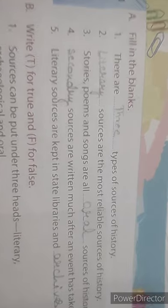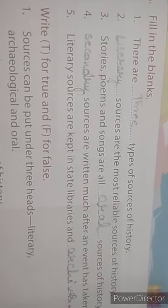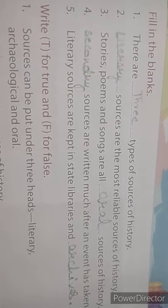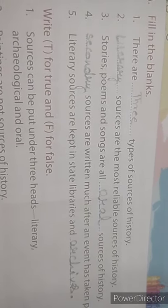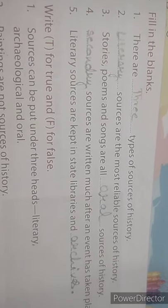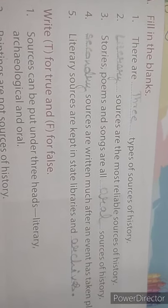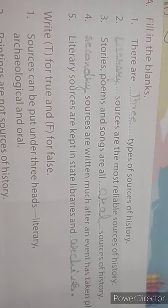Fill in the blanks number 1: There are 3 types of sources of history. Number 2: Literary sources are the most reliable sources of history. Number 3: Stories, poems and songs are all oral sources of history. Number 4: Secondary sources are written much after an event has taken place. Number 5: Literary sources are kept in state libraries and archives.